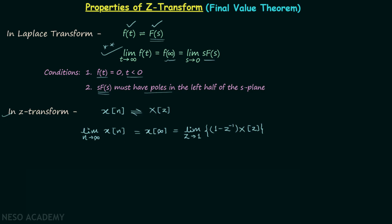When you compare the Z-transform FVT with the Laplace FVT, you will find some key differences. In the Laplace version we have S tending to 0, but here we have Z tending to 1. Also in Laplace we have S·F(S), but in Z-transform we do not have Z·X(Z); instead we have (1 - Z⁻¹)·X(Z). The proof of the final value theorem in Z-transform is not required in this course, so you have to remember it as it is.